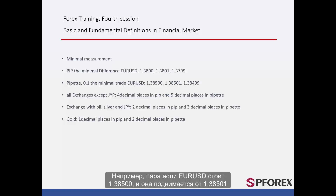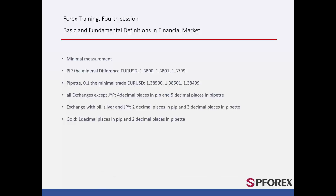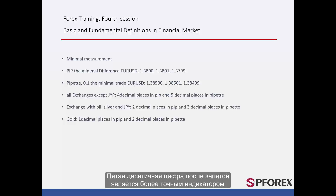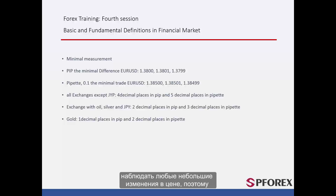For instance, if the EUR against the US Dollar is shown as 1.38500 and it rises to 1.38501 or falls to 1.38499, it has gained or lost 1 pipette respectively. A 5 decimal places figure is more accurate than a 4 decimal places figure, as it allows you to observe any small changes in the price, therefore giving you greater insight and a higher chance of making a profit.